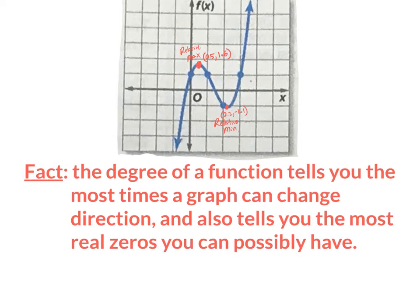The degree of a function tells you the most real zeros you could possibly have. This was a cubic function graphed — how many real zeros does it have? One, two, three. The degree is three. The maximum amount of real zeros will be three. There's no way to graph a y equals x³ type function that crosses the x-axis four, five, or six times. It won't always have three, but the most answers on a third degree function will be three.